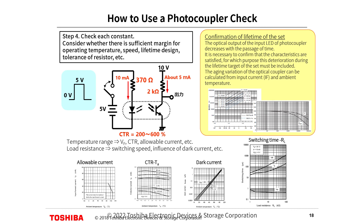Step 4: Check each design constant. Consider whether there is sufficient margin for operating temperature, speed, lifetime design, resistor tolerance, etc. Confirmation of set lifetime: the optical output of the input LED decreases with the passage of time. It is necessary to confirm that characteristics are satisfied by including this deterioration within the lifetime target. The aging variation of the optical coupler can be calculated from input current IF and ambient temperature.